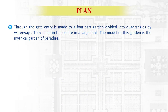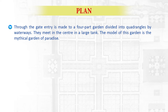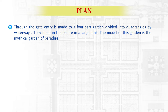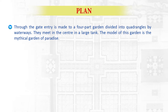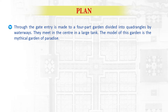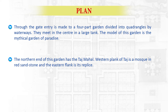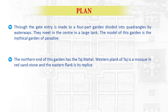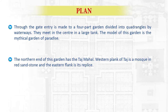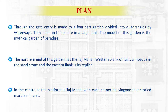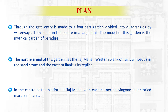Through the gate, entry is made to a four-part garden divided into quadrangles by waterways. They meet in the center in a large tank. The model of this garden is the mythical Garden of Paradise. The northern end of this garden has the Taj Mahal. The western flank of the Taj is a mosque in red sandstone and the eastern flank is its replica. In the center of the platform is Taj Mahal, with each corner having a four-storied marble minaret.